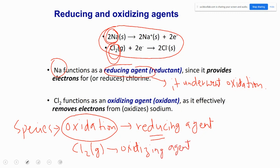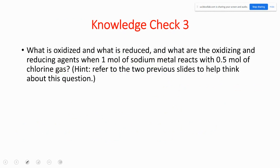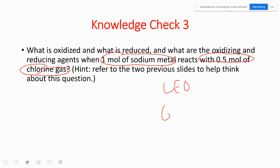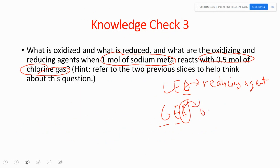For knowledge check 3, I made it easy: I'm asking what is oxidized, what is reduced, and what are the oxidizing and reducing agents when one mole of sodium metal reacts with 0.5 mole of chlorine gas. The mole number is just a distraction — all you need is LEO GER. Loss of electrons is oxidation; that species is a reducing agent. Gain of electrons is reduction; that species is your oxidizing agent.